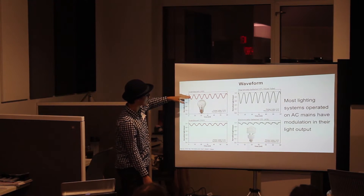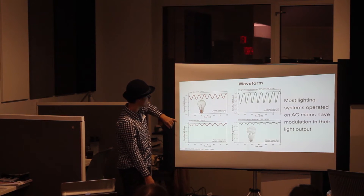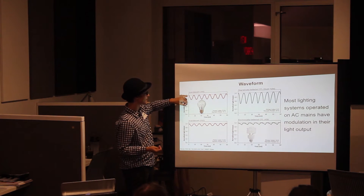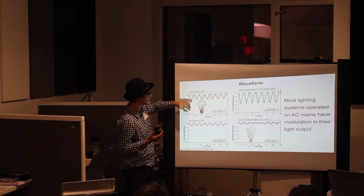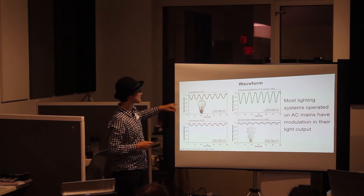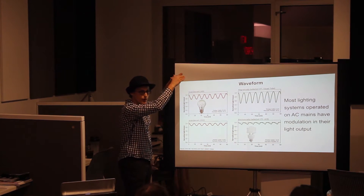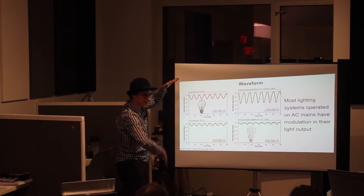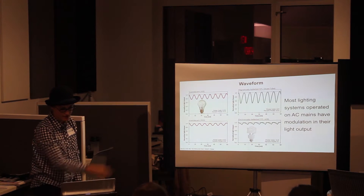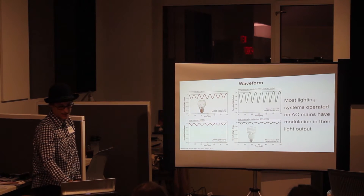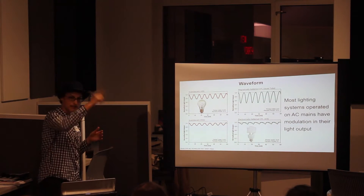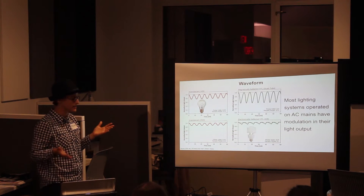If we look at the zero crossing point, it becomes 120 hertz in the US, because the light will actually turn on at the full high point, off at zero, and then on again at the low point. So looking at the waveforms, starting with incandescence — almost everything shows that fluctuation from AC mains.